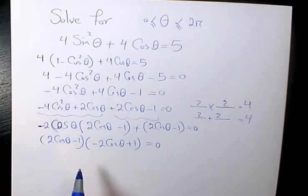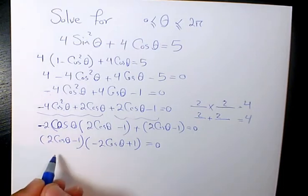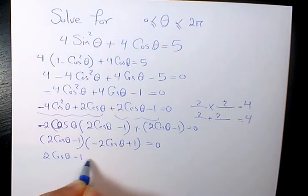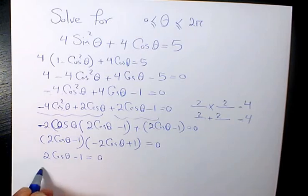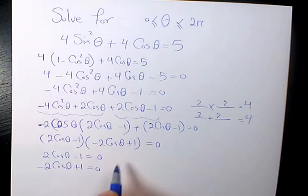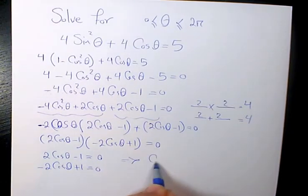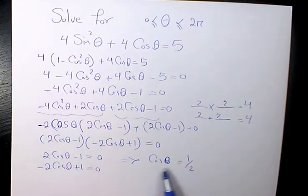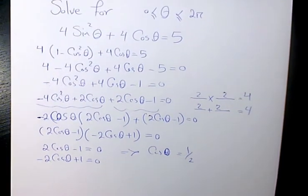Now I solve it. Setting each factor equal to zero: 2 cosine theta minus 1 equals 0, or negative 2 cosine theta plus 1 equals 0 — which is the same thing. So we get one unique answer: cosine theta equals 1 over 2.